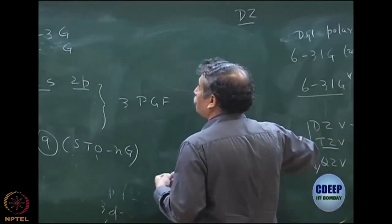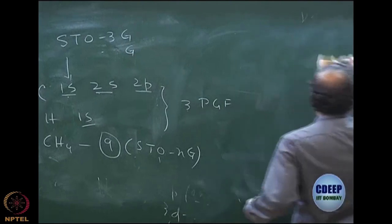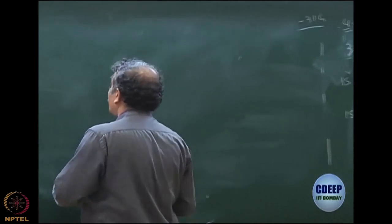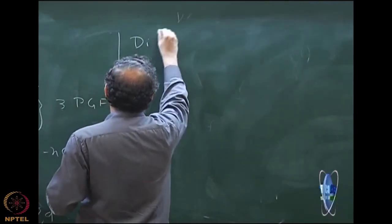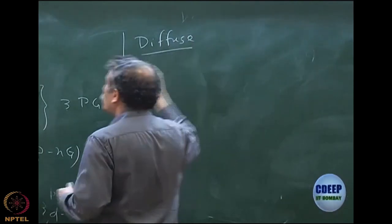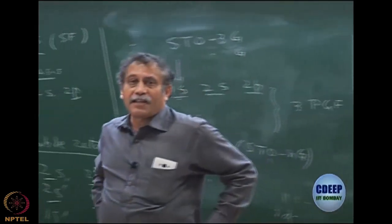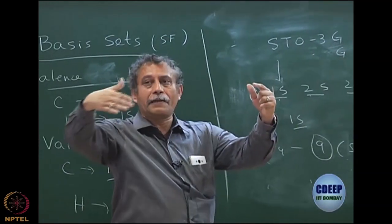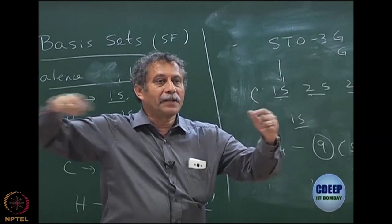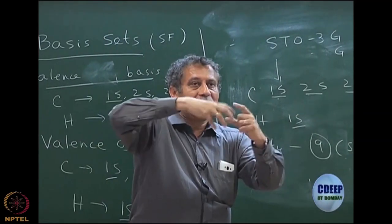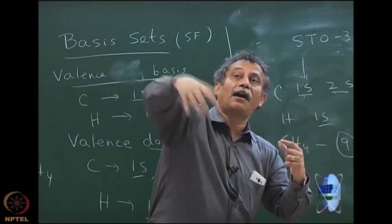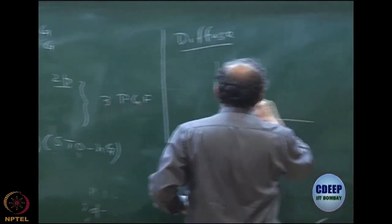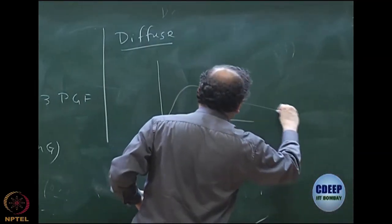One more type of function I must add before completing the basis set discussion is what are called diffuse functions. For many problems I need to add, apart from all these, something called diffuse functions. A diffuse function is a function which decays very, very slowly — the function is diffused over a large range and will decay very slowly with distance.